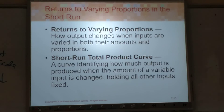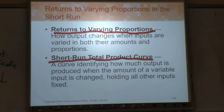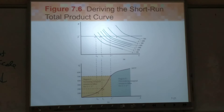Returns to varying proportions means you want to use different ratios of inputs to match your production. The short-run total product curve is when we have one fixed input. Basically, you can have different levels of production, and at each production level you can trace the total production curve.